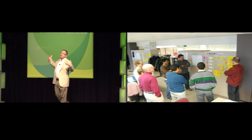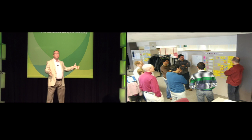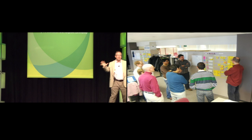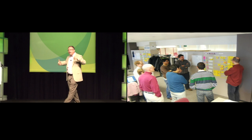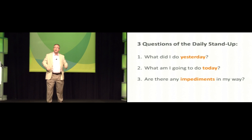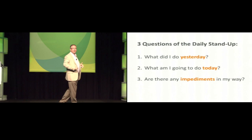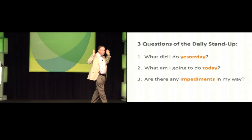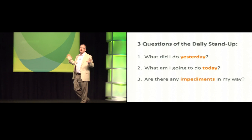Another part of Scrum is something called the daily stand-up, which is a 15-minute meeting held every day. It's called a stand-up because we do it standing up to keep it to 15 minutes. During this meeting, each person on the team goes around and answers three questions: What did I do yesterday? What am I going to do today? Are there any impediments in my way? This is all about keeping forward momentum and making sure the team has complete transparency.